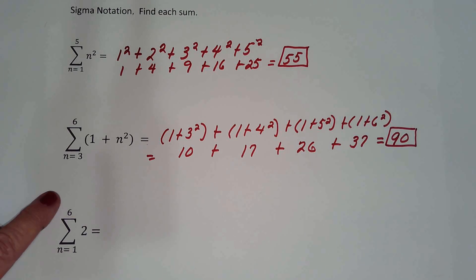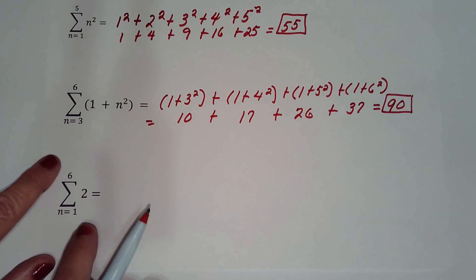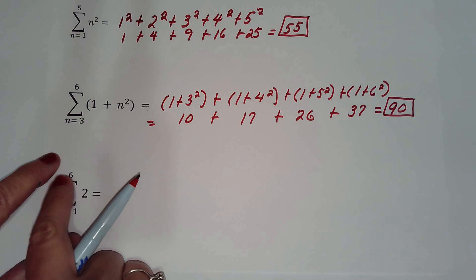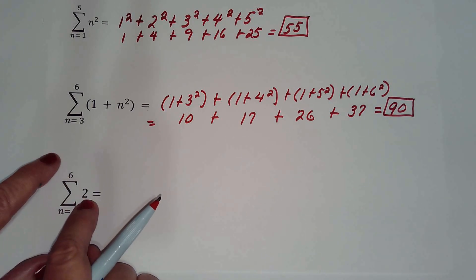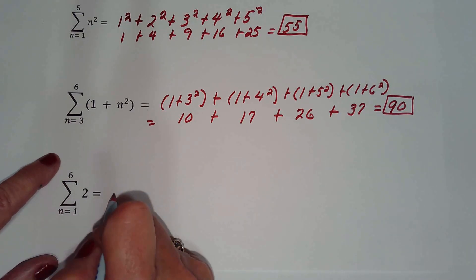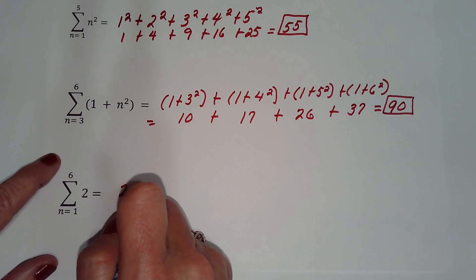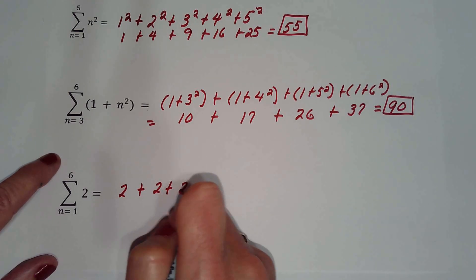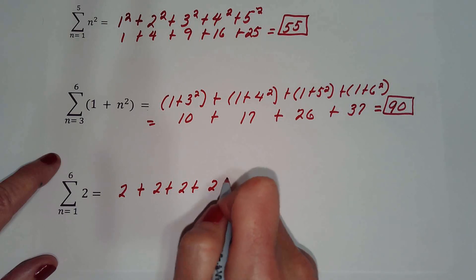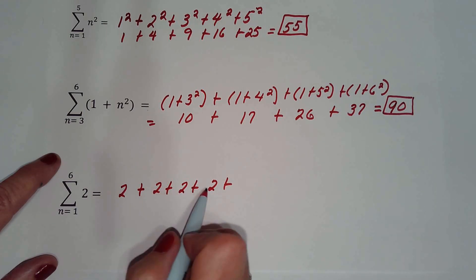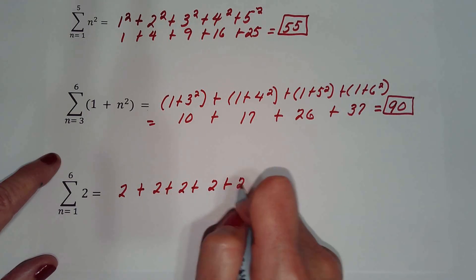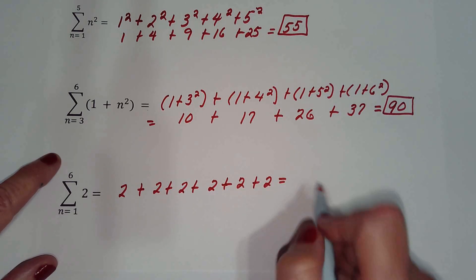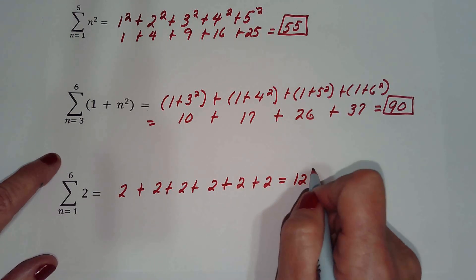Let's look at the third example. I start at 1, I end at 6, and the term is just 2 — there's no variable. So it's going to be 2 plus 2 plus 2 plus 2 plus 2 plus 2, for values 1, 2, 3, 4, 5, 6. Since there was no variable, I add those together and get 12.